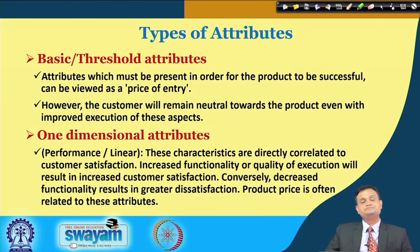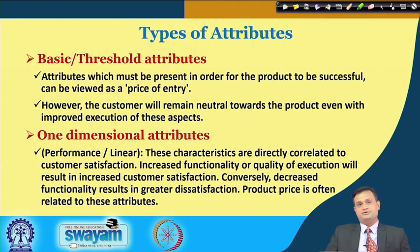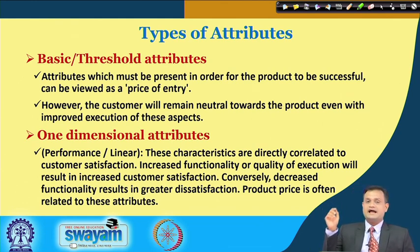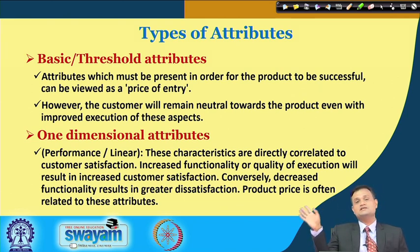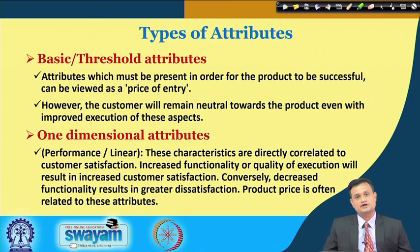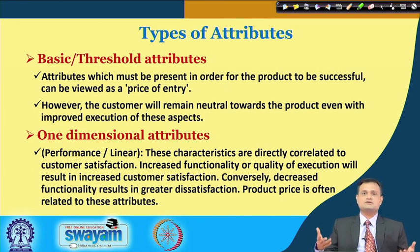The first type is the basic or threshold attribute — this must be present for the product to be successful and is the price of entry. You cannot compromise on this. The customer will remain neutral towards the product even with improved execution of these basic aspects, because this is the bare minimum expectation.